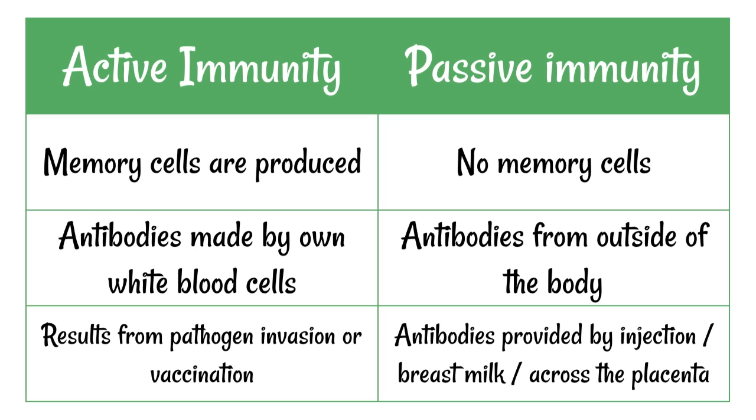It might result from invasion of a pathogen or vaccination to provide active immunity. And we'll discuss vaccinations in just a moment. But passive immunity will result from injections. For example, rabies can be treated by an injection of antibodies. And also, for example, breast milk provides antibodies to a baby.